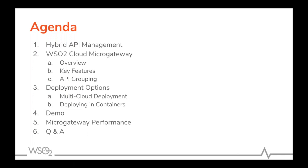The agenda for today is about Hybrid API Management and the WSO2 Cloud Micro Gateway. We'll discuss the overview of the deployment, key features and the API grouping feature, which is the latest addition to WSO2 Cloud Micro Gateway. We will also talk about deployment options, multi-cloud deployment and deployment in containers, and we will have a short demo with a use case. Finally, we'll show you the micro gateway performance results and there will be a Q&A session.